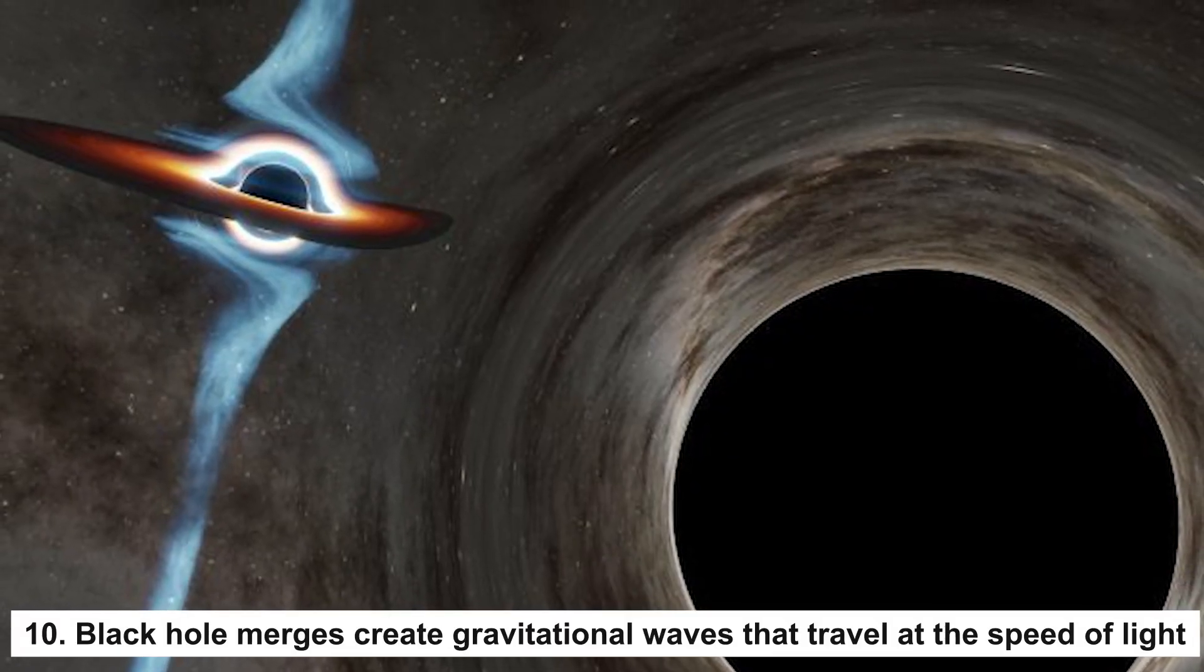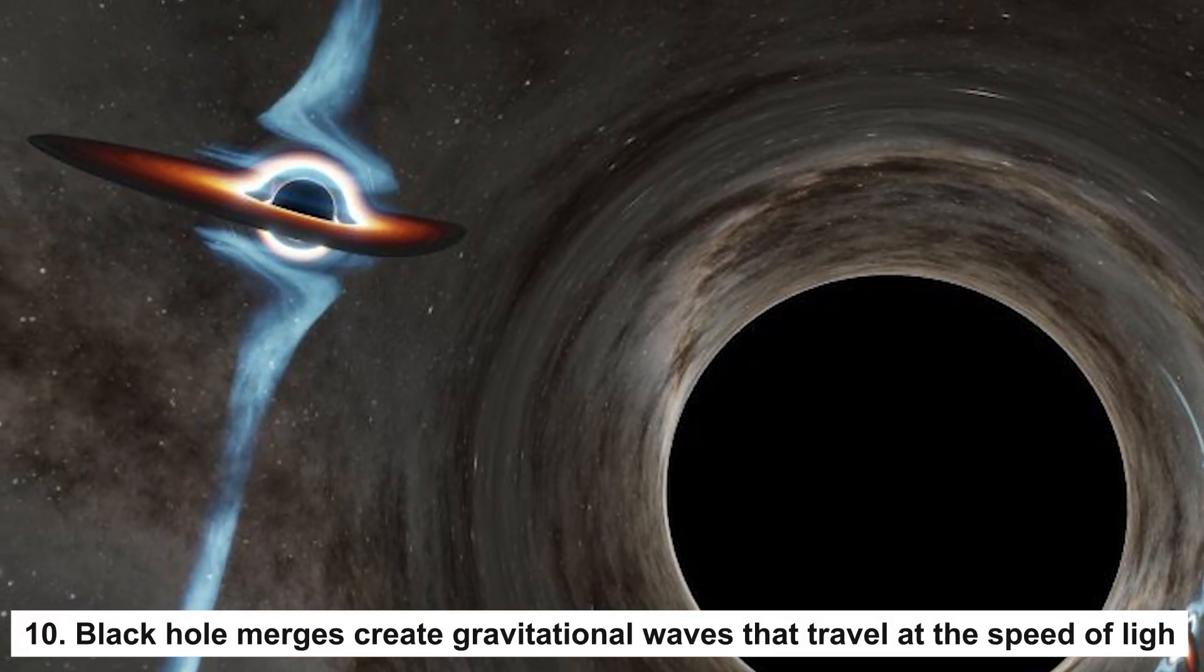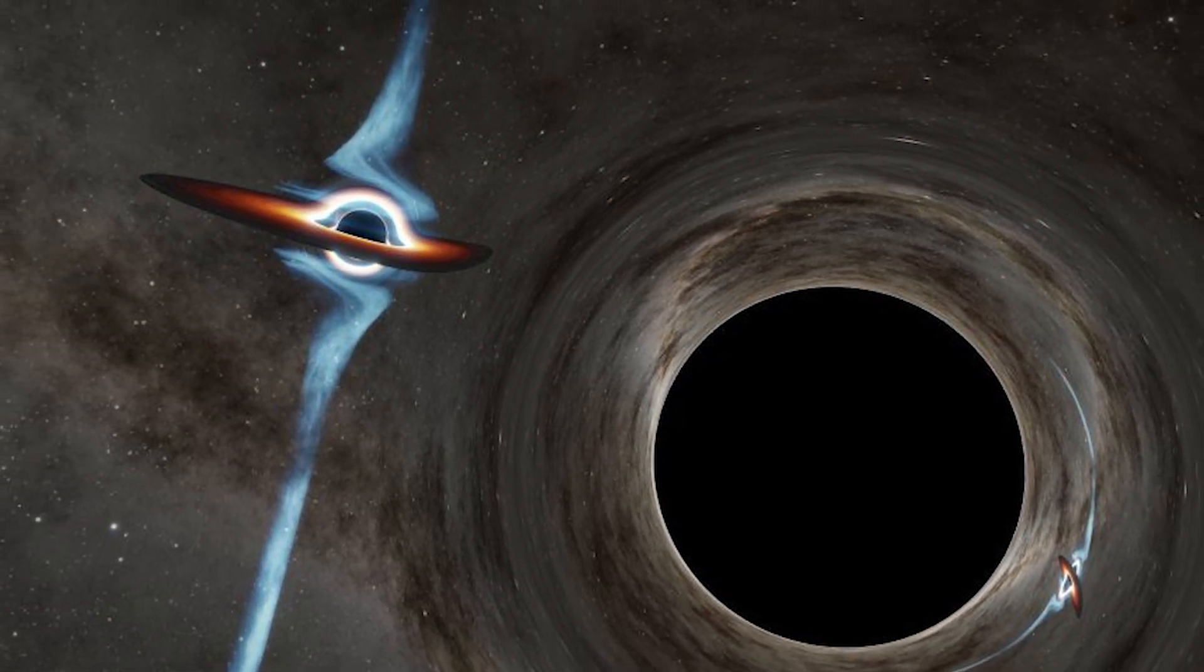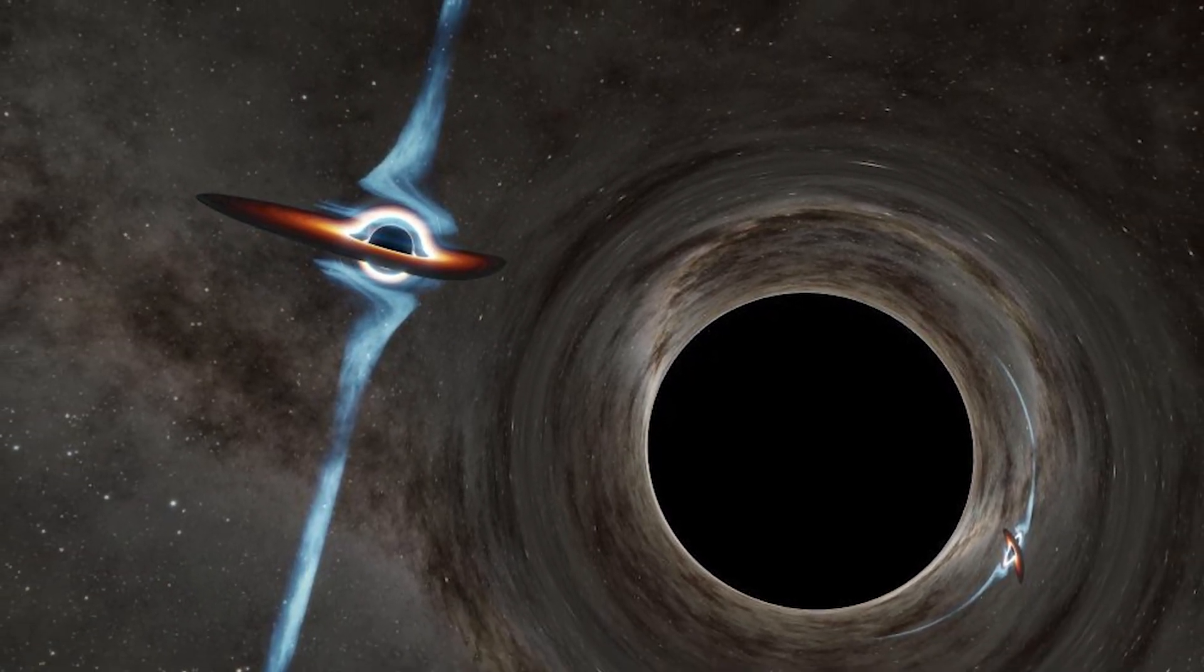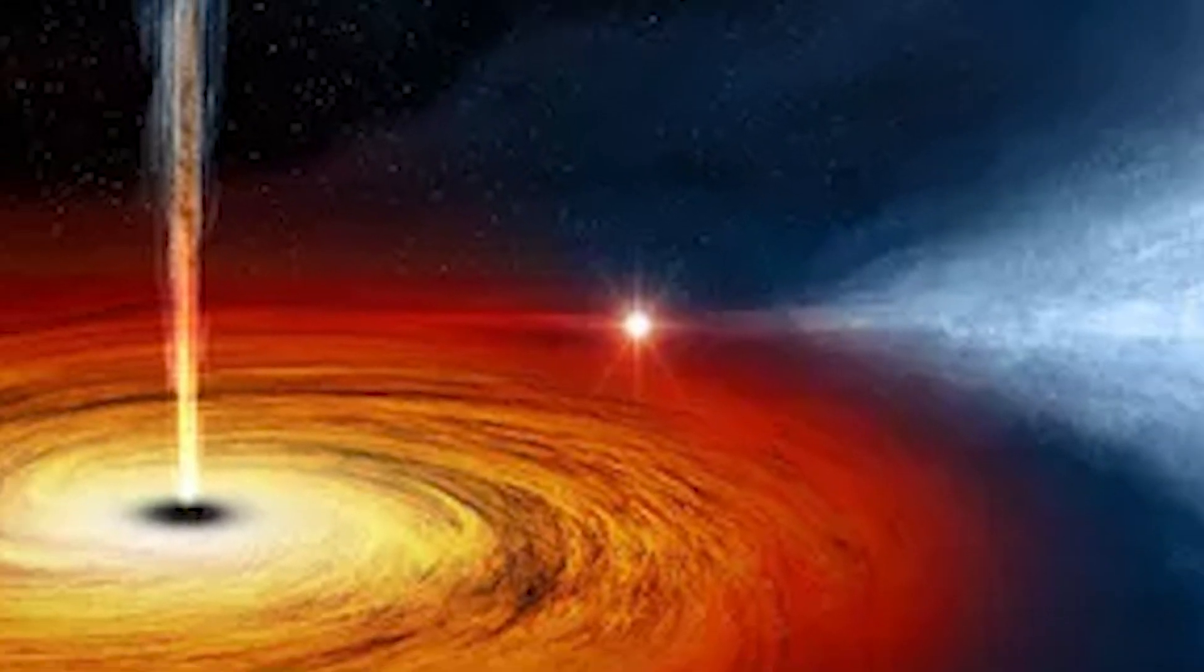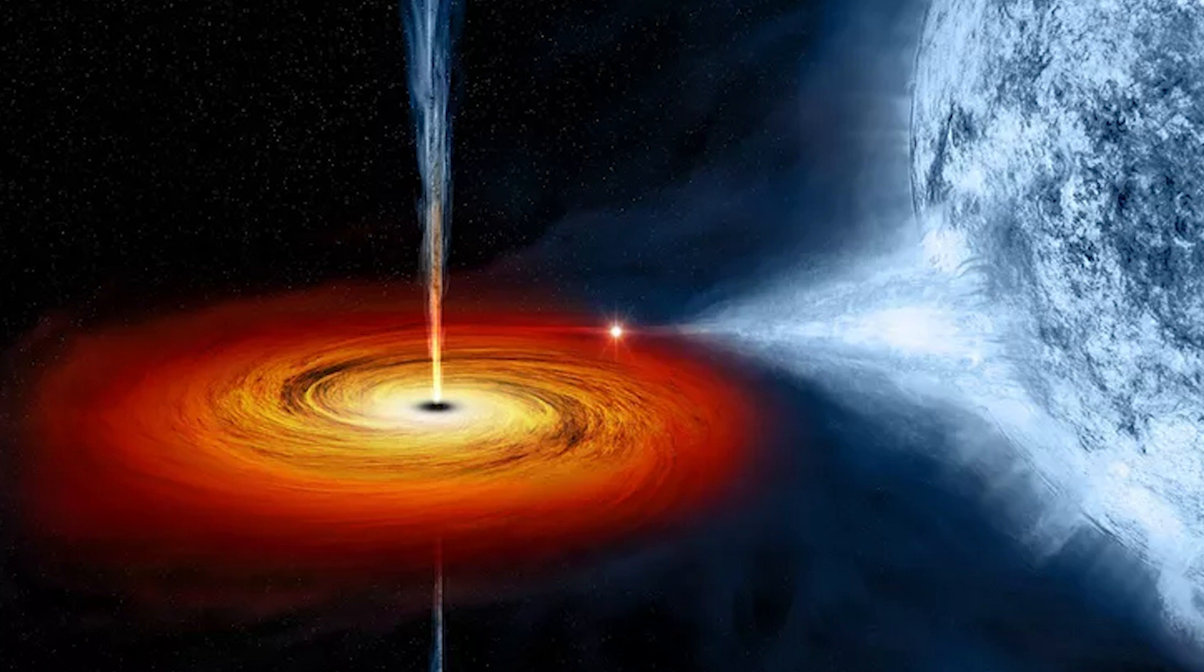Number 10: Black hole merges create gravitational waves that travel at the speed of light. Another intriguing aspect of black holes is the discovery of gravitational waves produced by the merging of two black holes. Gravitational waves are ripples that travel in space-time at the speed of light. They were first detected directly by the Laser Interferometer Gravitational Wave Observatory in 2015 and confirmed another important prediction of Einstein's general theory of relativity.